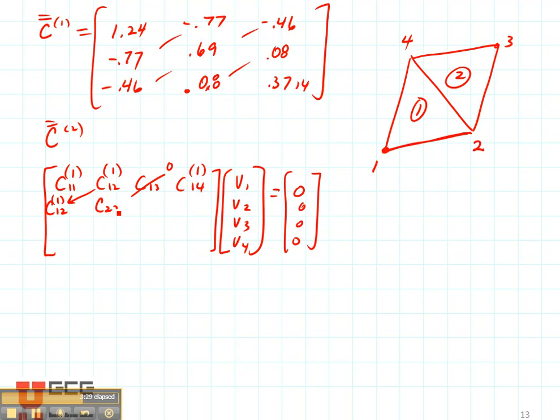Now let's look at C22. C22 is in both elements so it's going to come from both elements. Now let's look at C23. C23 is going to come only from element number 2 and C24, that's going to come from both elements again.